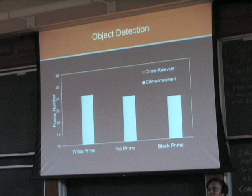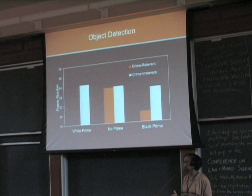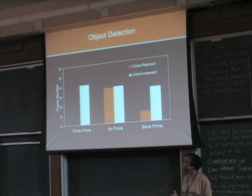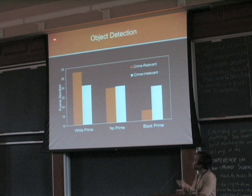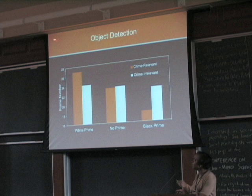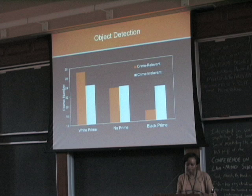But you get a really different pattern when you look at what they do for the crime-relevant objects. Simple exposure to the black faces beforehand drastically reduces the perceptual threshold at which they could recognize what those objects were — they need a lot less information to say, 'oh, that's a gun' or 'that's a knife.' And when we expose them to the white faces beforehand you get the opposite effect. They need a lot more information, more clarity before they're able to say, 'oh, that's a gun' or 'that's a knife.'